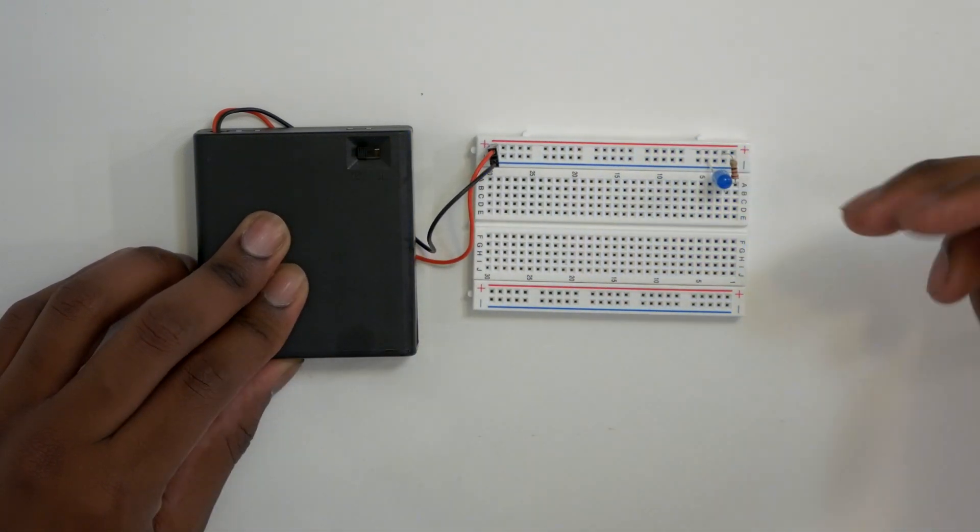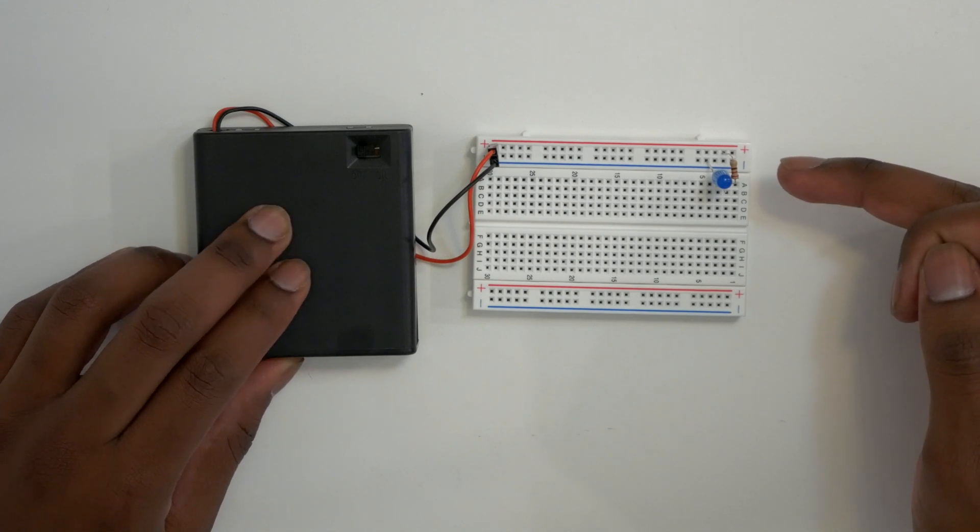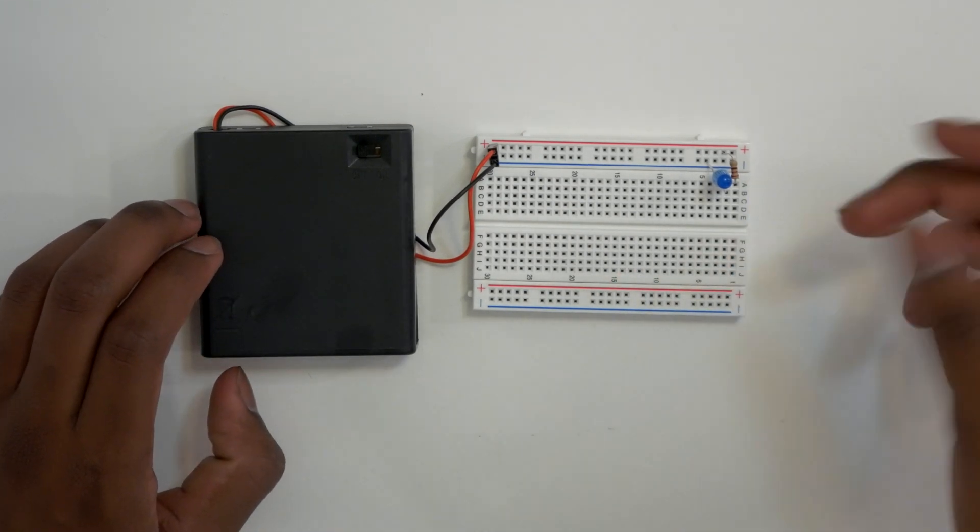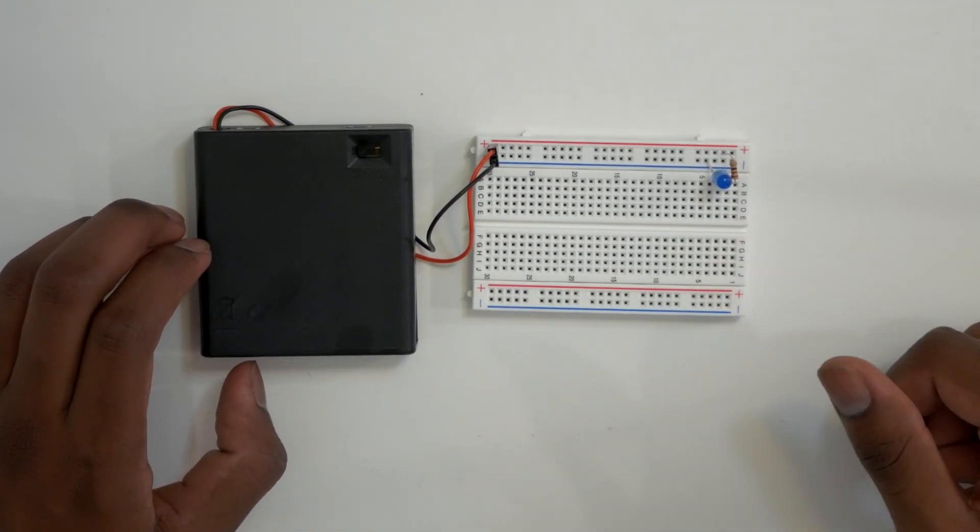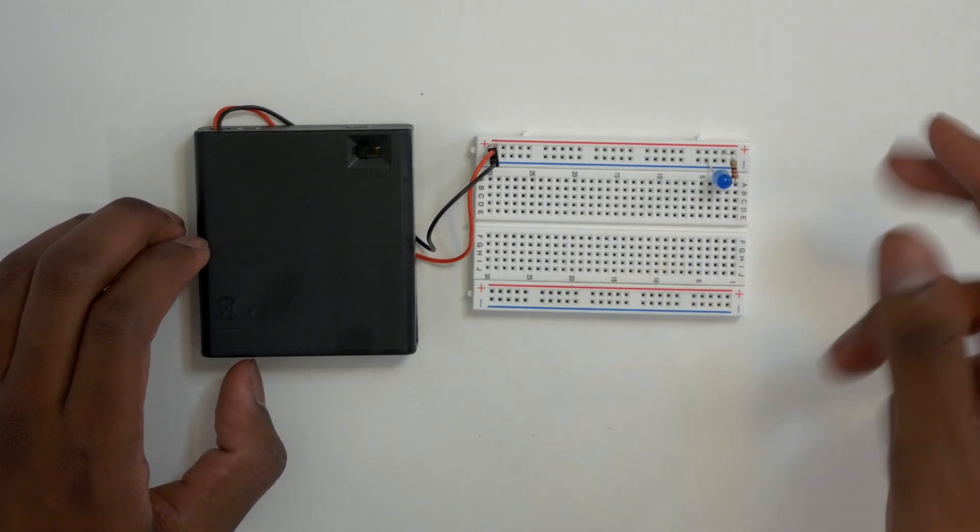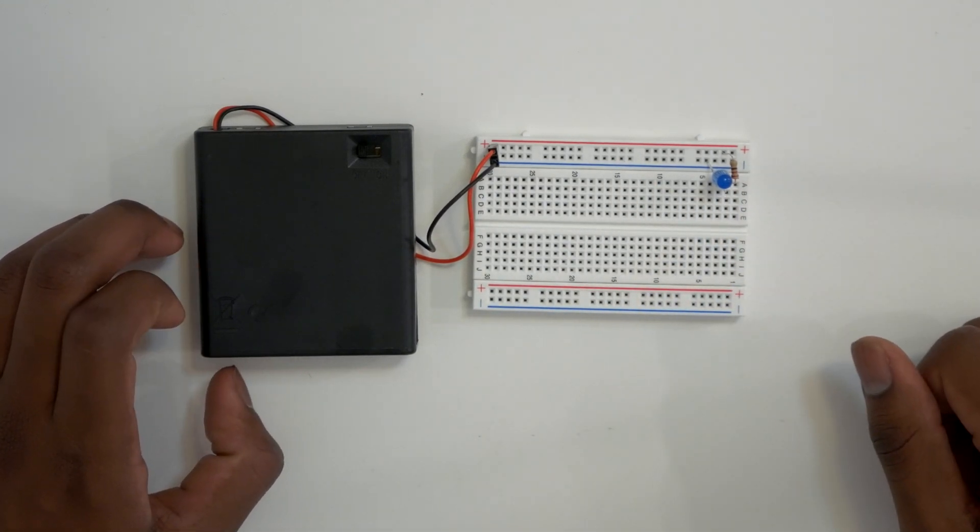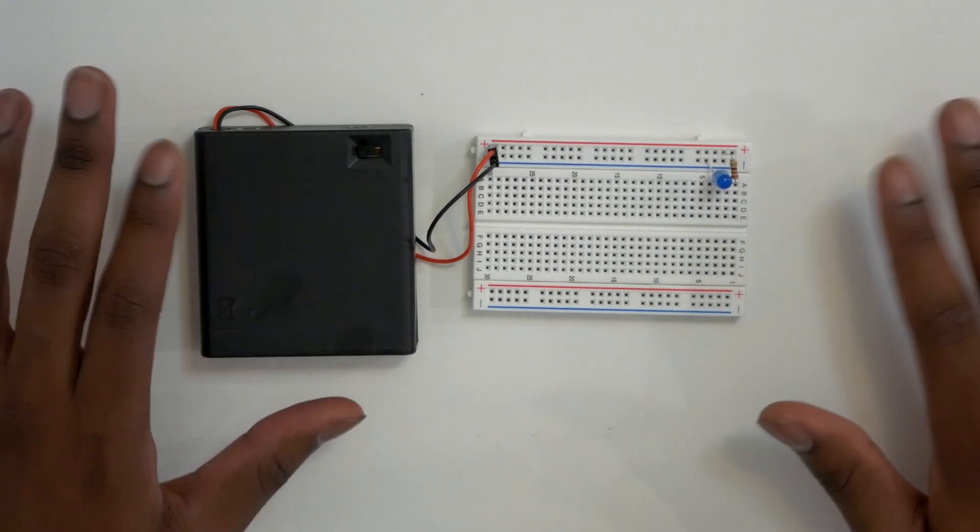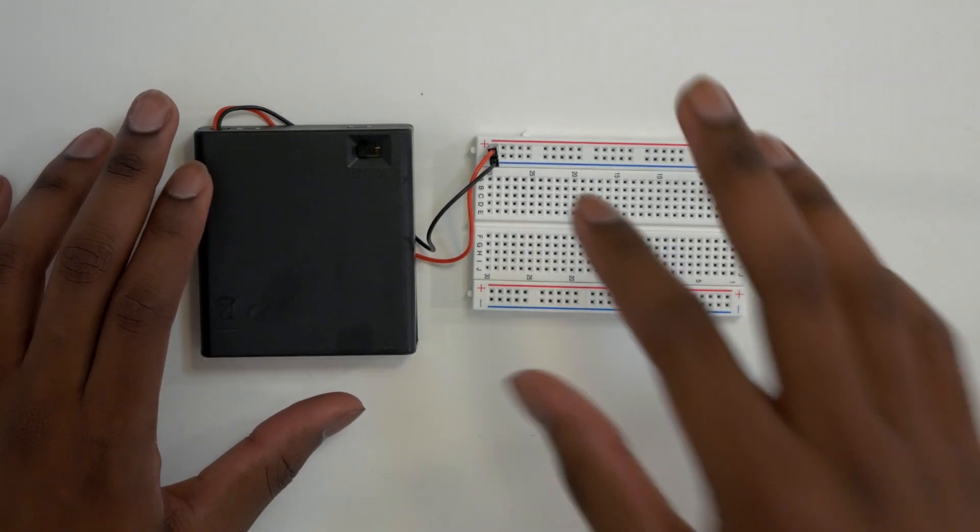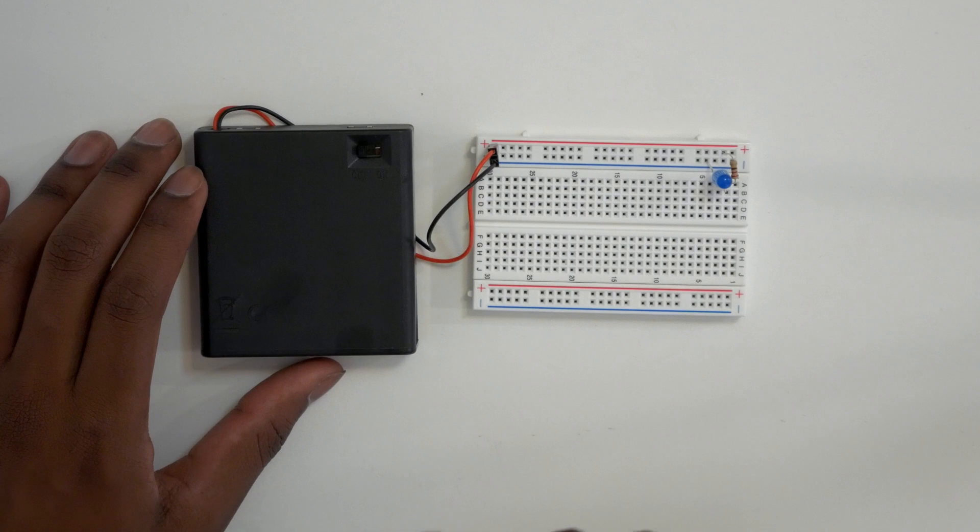But the real question is, how did we know to choose this resistor? And how did we know to hook them up in this specific order? Why is it resistor first and LED second? And these are great questions that we're going to get into right now. So the first question is, why did we choose that resistor? And we go into this in the booklet, so let's go back to the booklet and check it out.